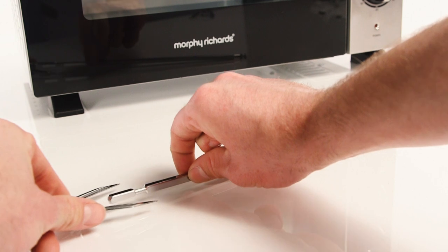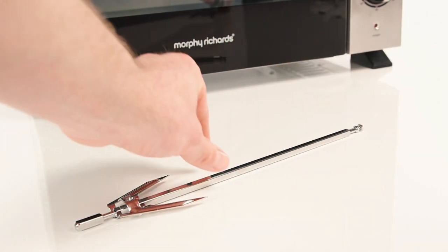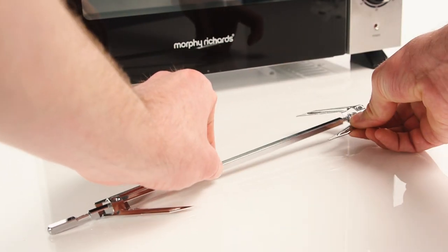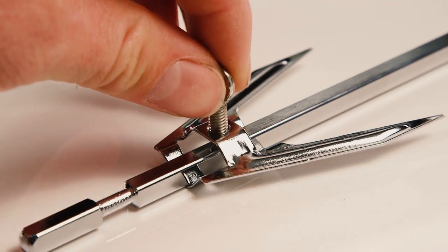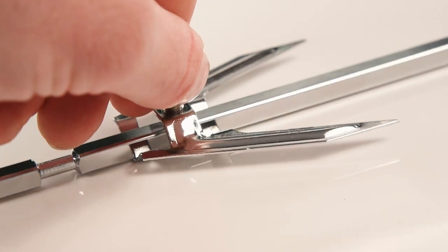Then, fit the claws onto the rotisserie spit and press them against the chicken or joint. Fit the thumb screws into the holes in the claws and turn until secure.